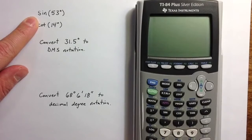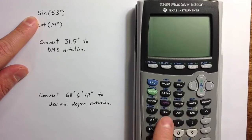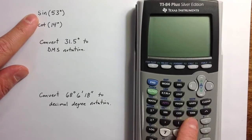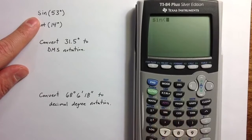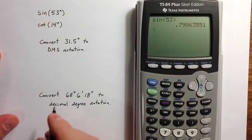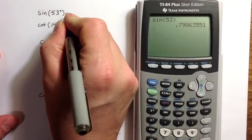First we can calculate trigonometric function values for any angle using the sine, cosine, and tangent keys. For example, sine of 53 we can calculate directly by typing in sine of 53 and hitting enter. The value we get is .7986.